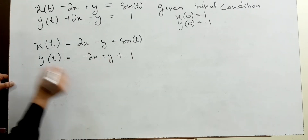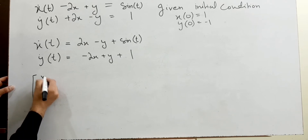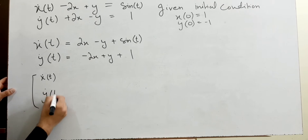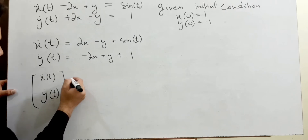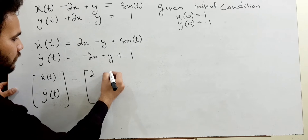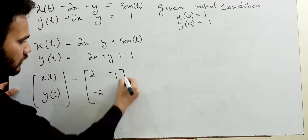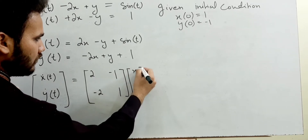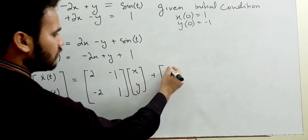The matrix form will be: x-dot of t, y-dot of t — where the dot shows a derivative with respect to time — equals the coefficient matrix [2, -1; -2, 1] times [x; y], plus the non-homogeneous part [sin t; 1].